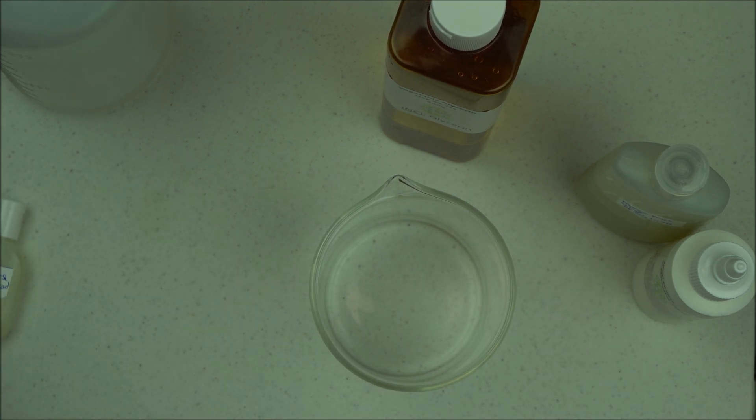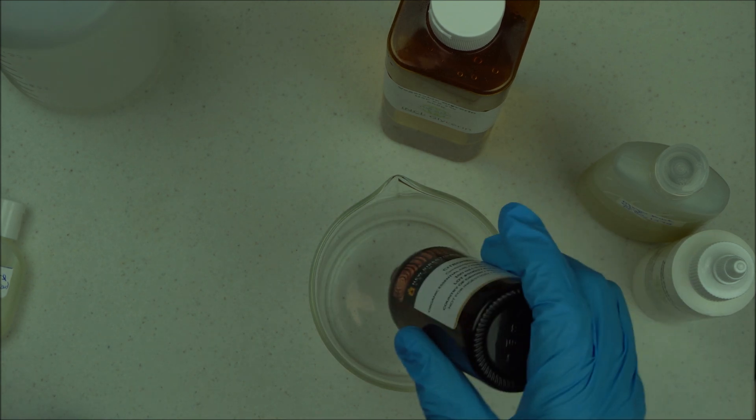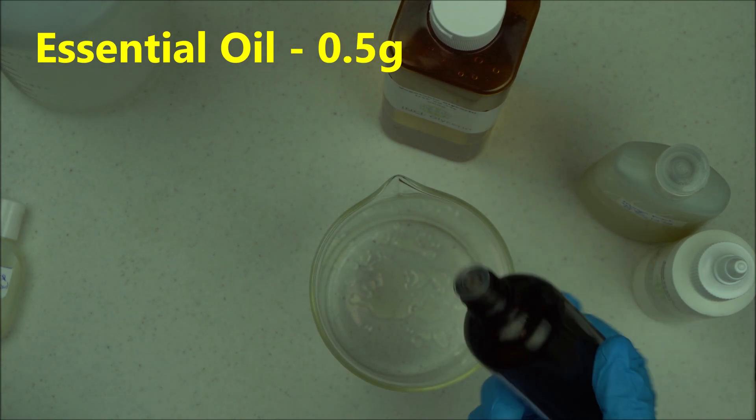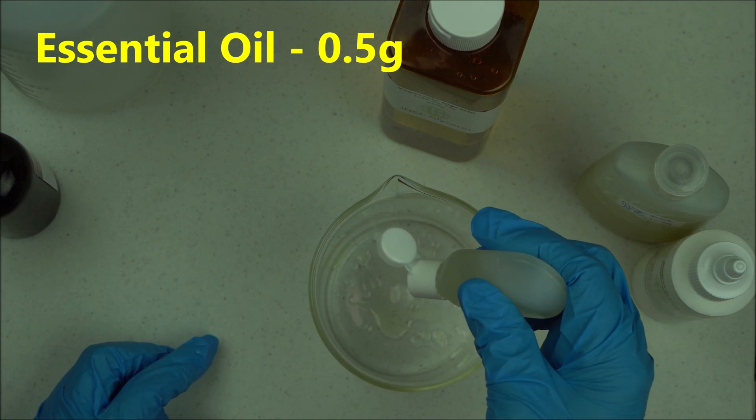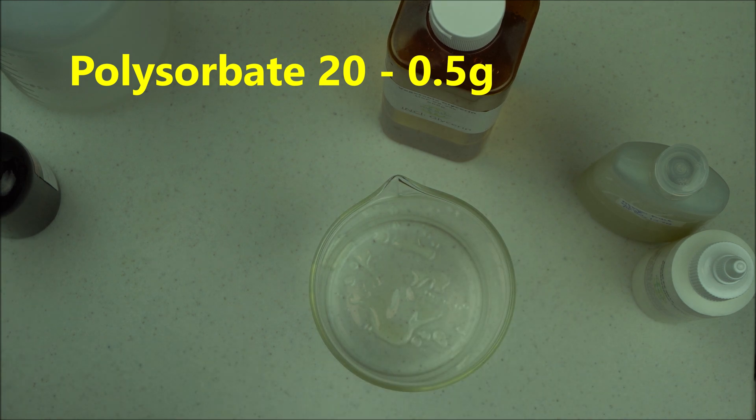Measure 0.5 grams of distilled water. We are making 100 grams of this product. Add 0.5 grams of distilled water, then add the same amount of Polysorbate 20—0.5 grams of Polysorbate 20. Mix both together.